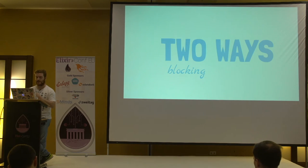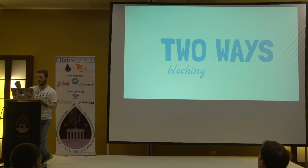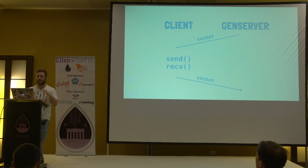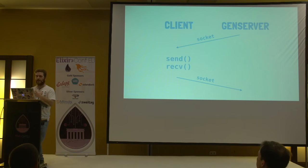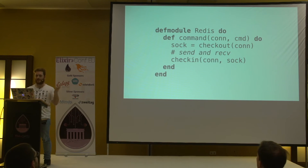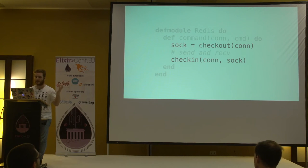The blocking approach: we have the GenServer with the socket in its state, and clients want to use that socket to talk to Redis. What happens is a client can check out the socket from the GenServer, use the socket to send data to Redis and receive data, and then give the socket back to the GenServer. The GenServer basically only acts as a container for these sockets — it won't do anything through them, it will just hand them to clients that ask. This is pseudo-code but it works: check out the socket, do the sending and receiving, then check the socket back in.